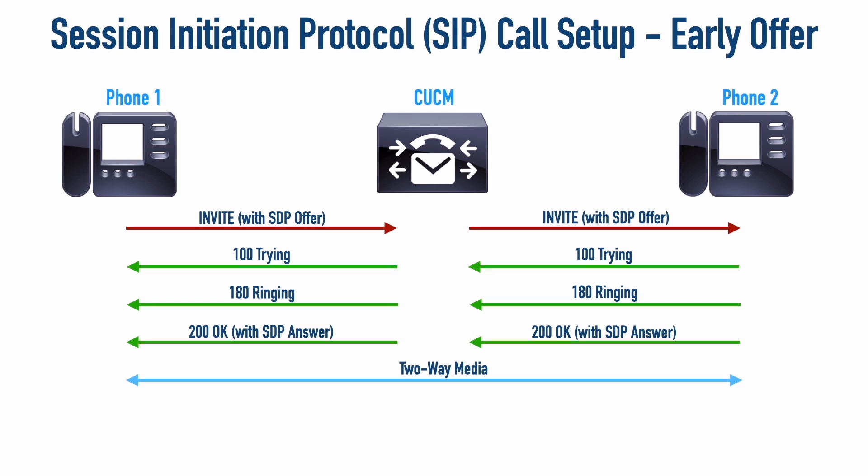Now we've completed all the negotiation needed to set up the call. At this point we have two-way media going — not through the Communications Manager this time, but directly between the IP phones. This could be our RTP media, the Real-time Transport Protocol, carrying voice or video. Once two-way media is set up, phone one sends back an ACK acknowledging that phone two has been invited into the conversation and the invitation is now complete. That ACK is forwarded to phone two, and now our early offer SIP call has been set up.